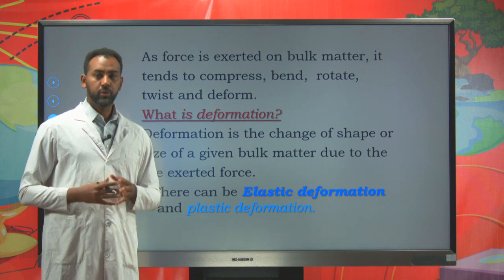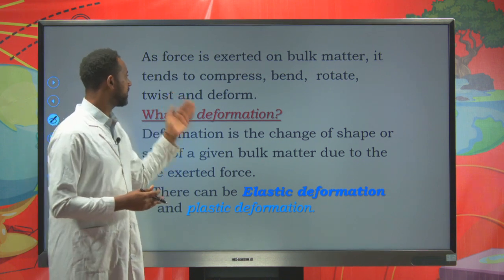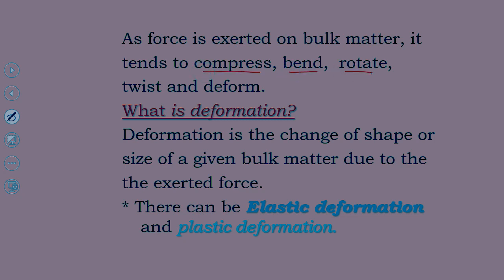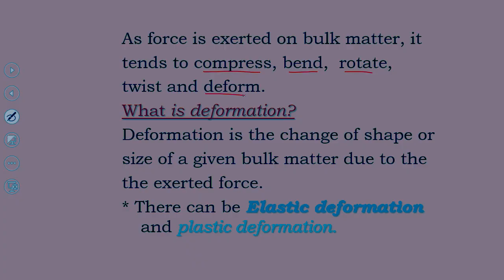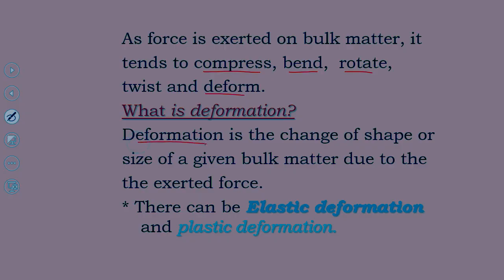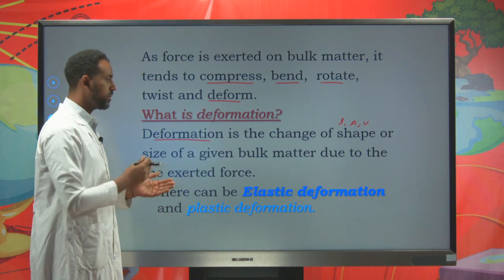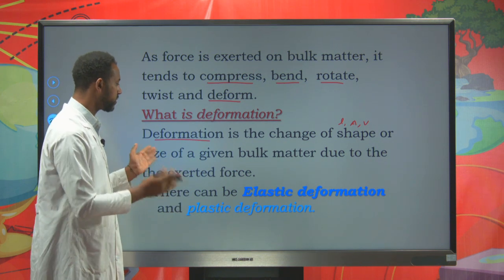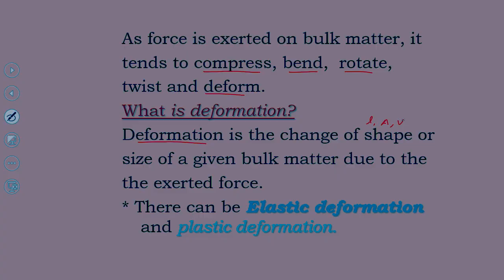As force is exerted on bulk matter, it may cause deformation — a different effect on those materials. It might compress, bend, rotate, or deform those bulk matters. Deformation is the change of shape or size of a given bulk matter. Due to the exerted force, there might be a change of shape or size — that is what we call deformation. The change might be in length, area, or volume. There are two types of deformation: elastic deformation and plastic deformation.